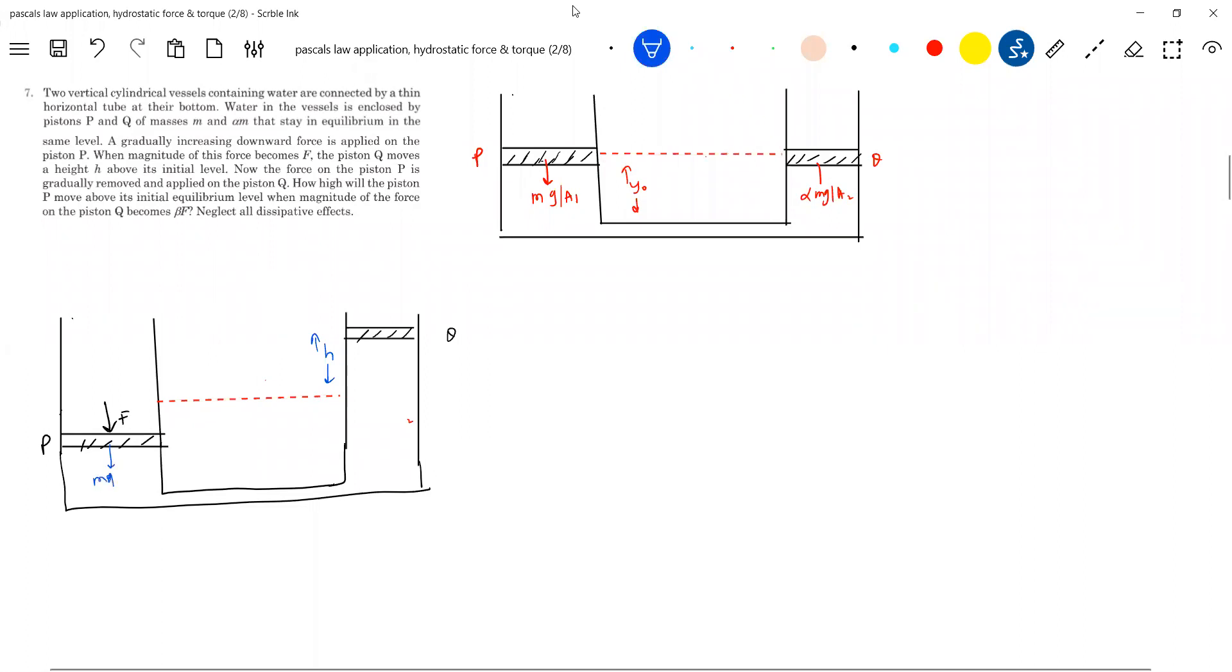What are the forces now? Mg by A1, alpha Mg by A2. There is an initial level. So it has risen by height H. So that is what we'll call this is Y1. And this everything will be Y0. Can you, looking at this, anything can you write?